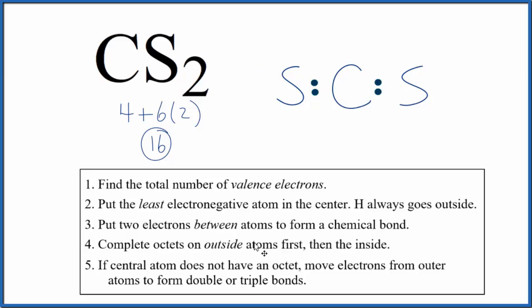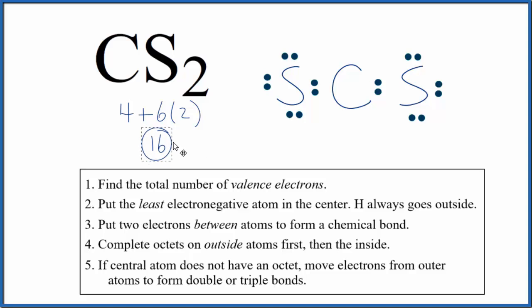Now we're going to go around the outside atoms and complete their octets — the sulfurs. After that, we can complete the octet on the central atom. The problem is we've already used all 16 of our valence electrons, so we're going to have to make a double bond or a triple bond here. We need to share more electrons so that each atom has an octet.